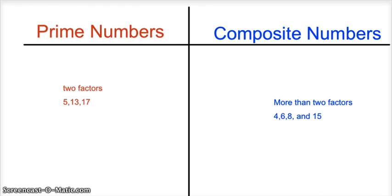Composite numbers have more than two factors. An example is 4, 6, 8, and 15.